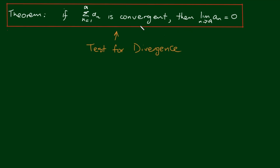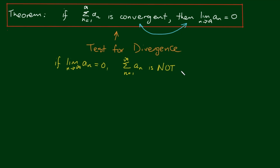We have to be careful because this theorem doesn't necessarily work the other way around. That is, if the limit as n approaches infinity of a_n is equal to zero, the series — the sum from n equals 1 to infinity of a_n — is not necessarily convergent. So just to be clear: if the series is convergent, then the terms must be going to zero. But if the terms are approaching zero, the series is not necessarily convergent.